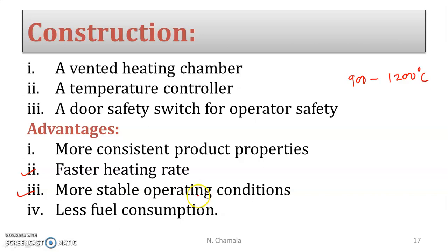More stable operating conditions — you can set the temperature stably, whereas in a combustion type furnace it is not easily possible to control that condition. Less fuel consumption — less fuel is required here, but more is needed in combustion type. Less pollution — in combustion type, fuel gases are more and pollute the environment. So this is about the types of furnaces.